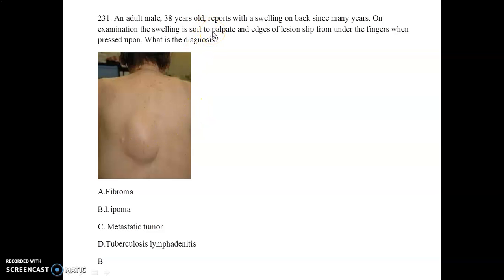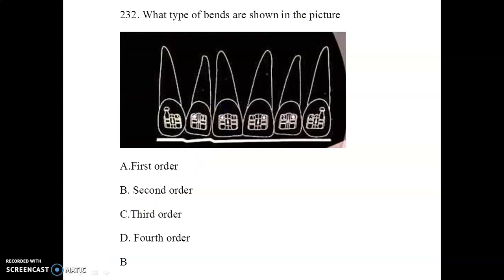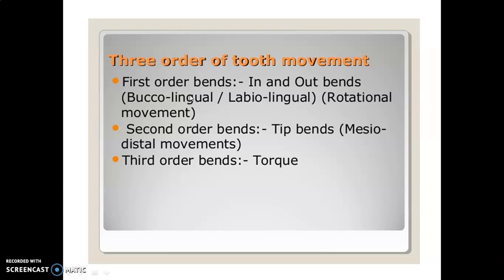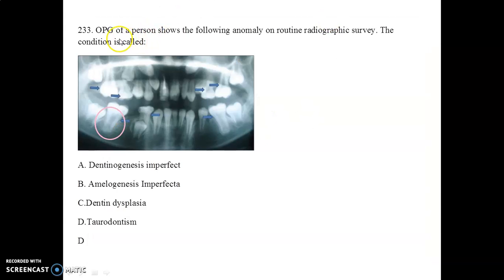An adult male, 38 years old, presents with swelling on the back for many years. On examination the swelling is soft to palpate and slips away from under the fingers when pressed — the diagnosis is lipoma. Regarding the type of bands shown: these are second-order bands. First-order bands are buccolingual or labiolingual 'in-and-out' bands for rotational movement; second-order bands are tip bands for mesiodistal movement; and third-order bands are torque bands.